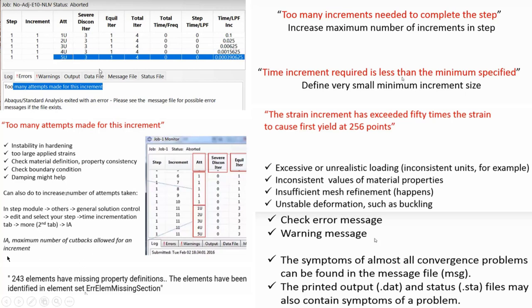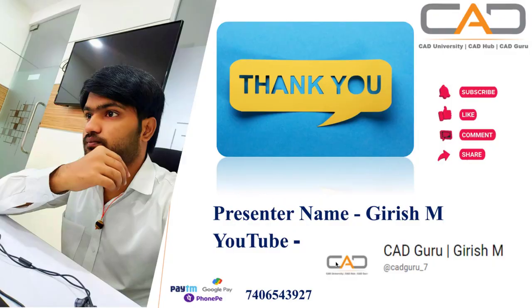Another frequent error is 'element missing section.' To resolve this, define the material properties properly and check for any geometry issues that need to be rectified. In summary, when facing any errors, use the error check message and warnings in the monitor, and refer to the dot message file, dot DAT file, and dot stat files to resolve issues in Abacus.